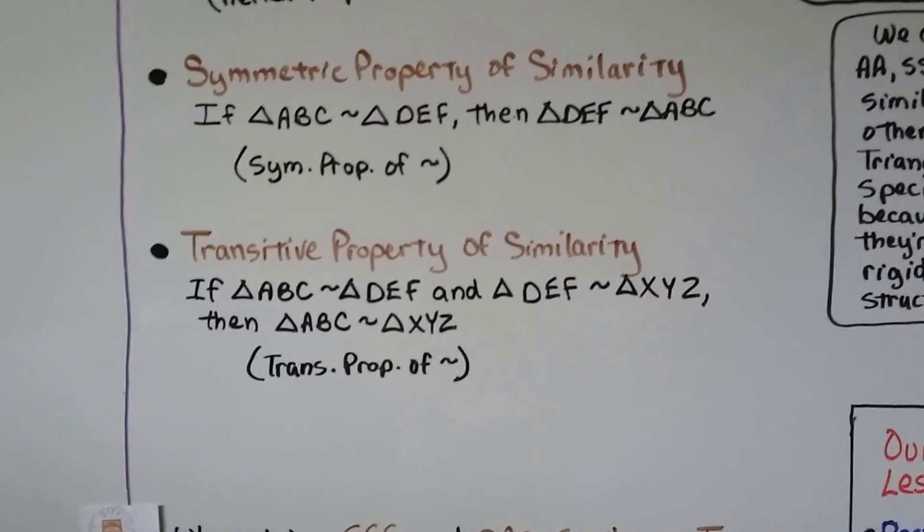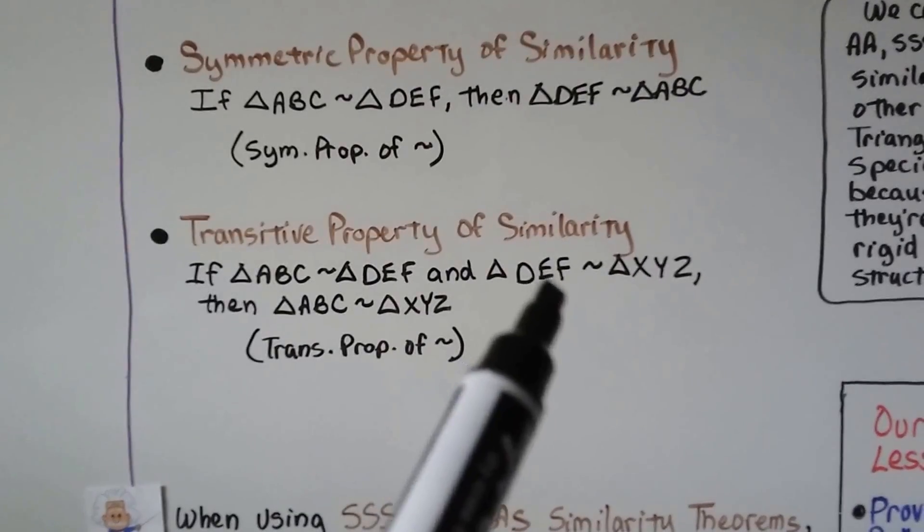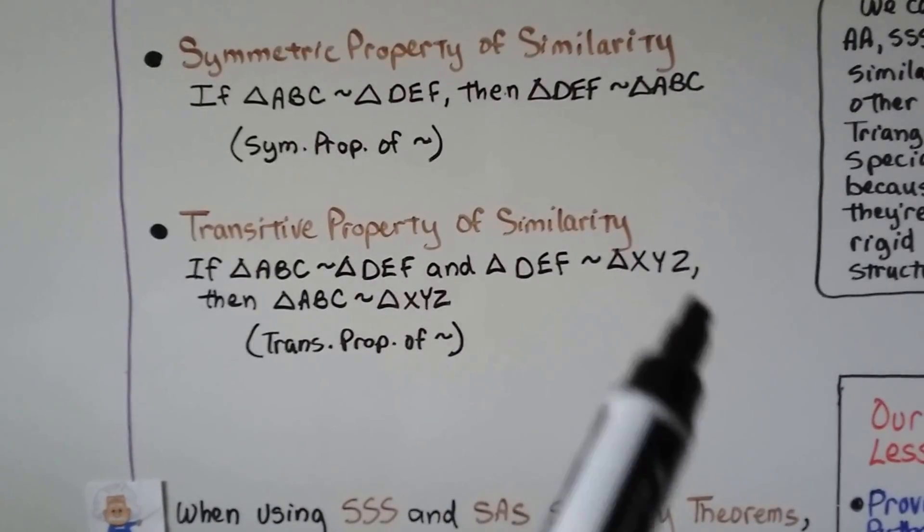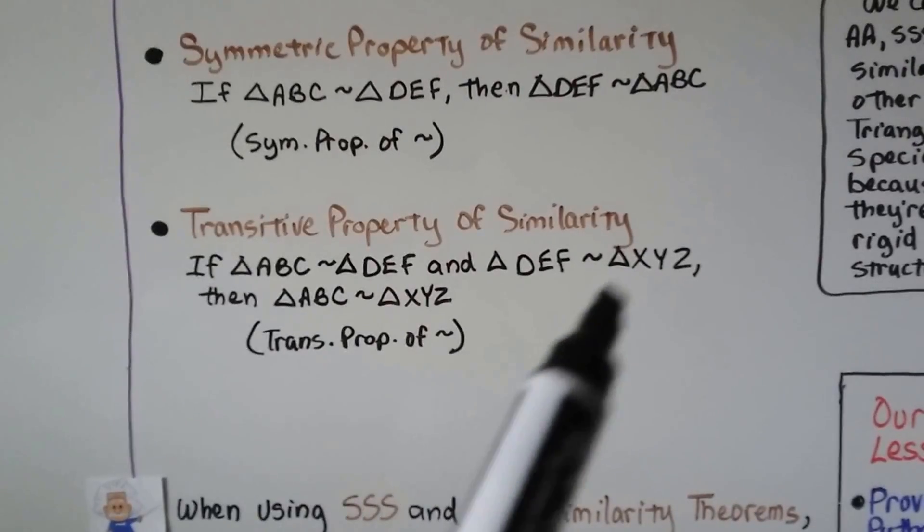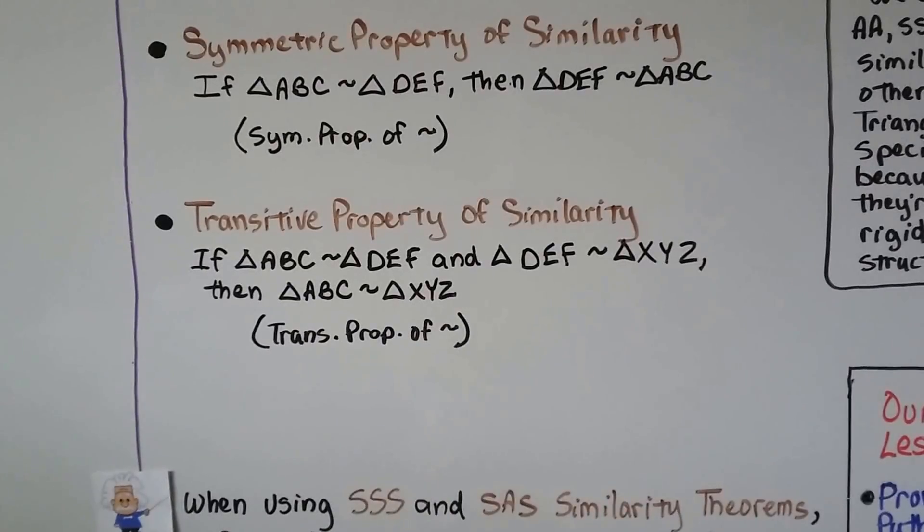For the transitive property of similarity, if triangle ABC is similar to triangle DEF, and triangle DEF is similar to triangle XYZ, well then triangle ABC is similar to triangle XYZ. We can write transitive property of similarity.